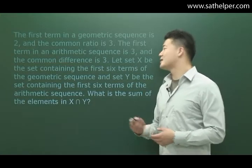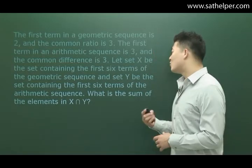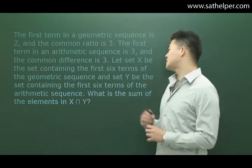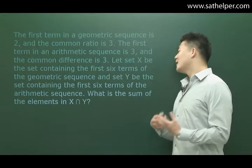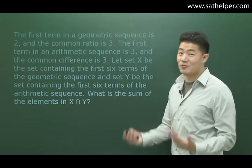Let set X be the set containing the first six terms of the geometric sequence. Let set Y be the set containing the first six terms of the arithmetic sequence. What is the sum of the elements in X intersection Y?